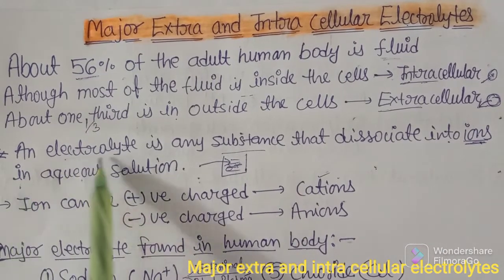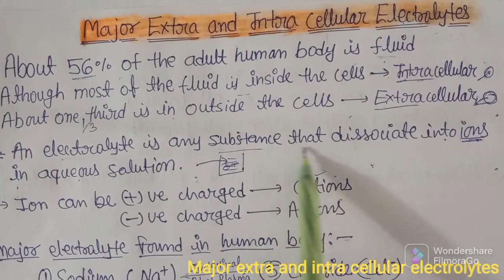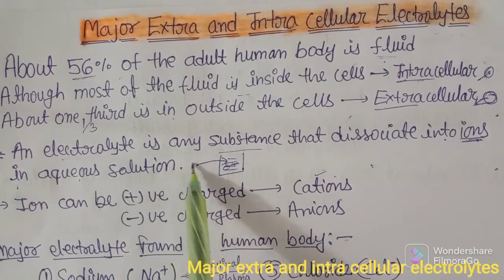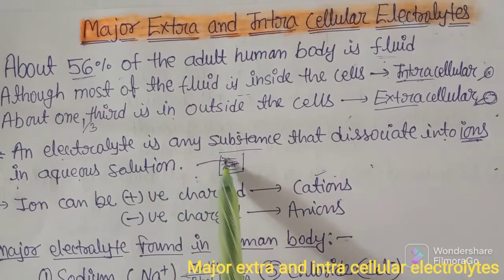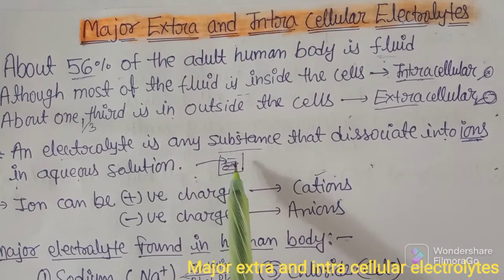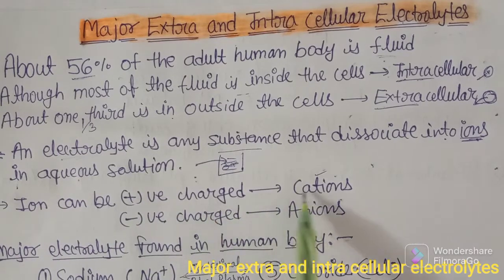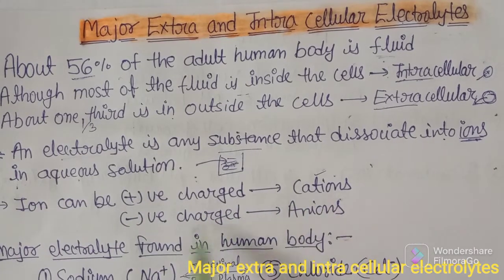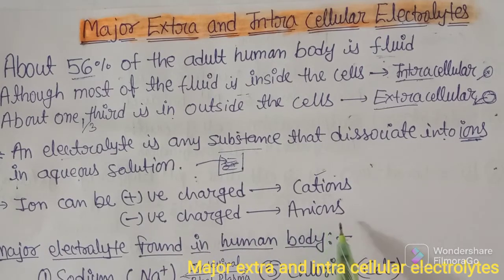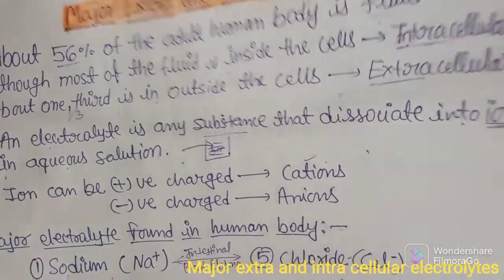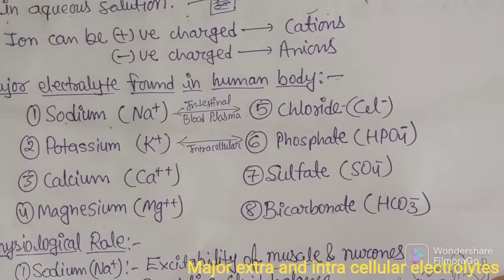An electrolyte is any substance that dissociates into ions in aqueous solution. Ions can be positively charged — those are called cations — or negatively charged, and those are called anions.